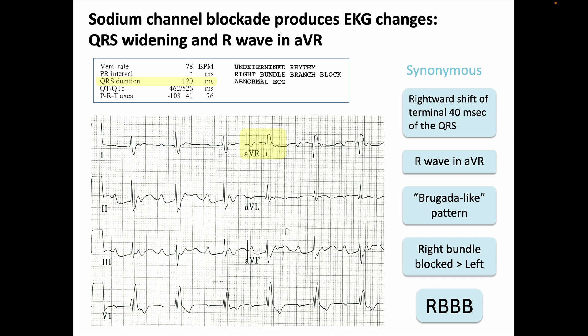With sodium channel blockade, the right bundle tends to be blocked more than the left, so depolarization toward the right is more delayed. Normally the right and left sides of the heart depolarize simultaneously, and because the left has so much greater muscle mass, we never see rightward depolarization on the surface EKG. But with sodium channel blockers, the left side depolarizes first, and if there's enough delay in right-sided depolarization, we can see it occur immediately afterward — best observed in AVR, the lead over the right side of the heart. AVR for right.